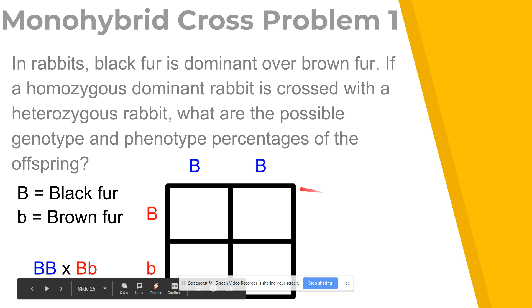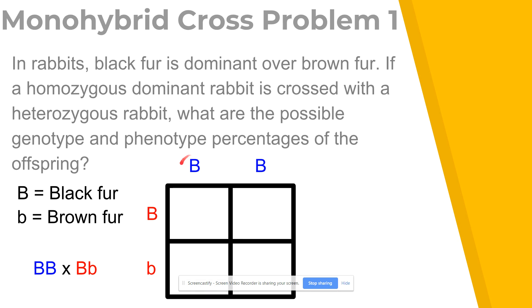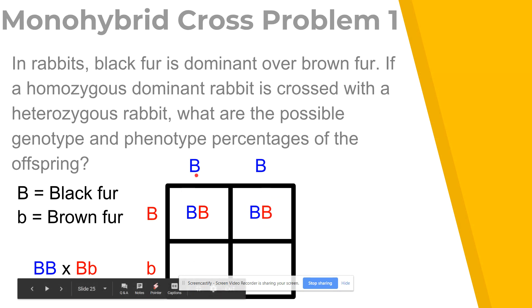Then we play battleship to fill in the Punnett square. We take this big B and bring it down, and this big B and bring it over to form a possible genotype of big B big B. We do the same for the next column — big B comes down, big B comes over to get another big B big B. The bottom row is a little different: we bring big B down and little b over to get big B little b, and the same again to get another big B little b.